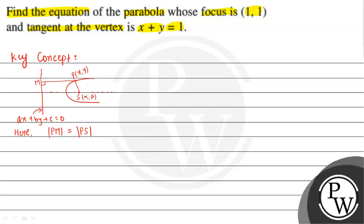PM and PS are equal. PM is the perpendicular distance from point P to the directrix, whose equation is Ax plus By plus C equal to 0. So PM is given by the modulus of Ax plus By plus C divided by square root of A squared plus B squared.